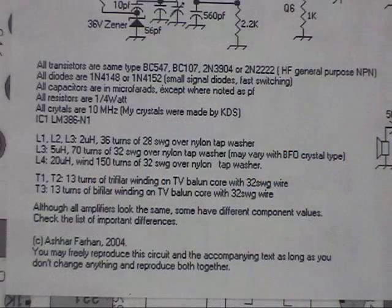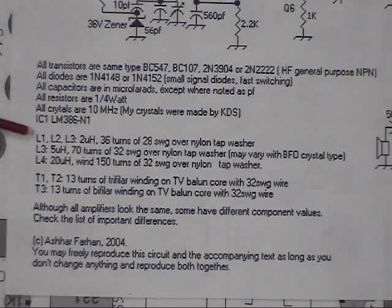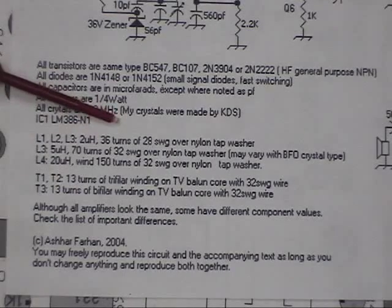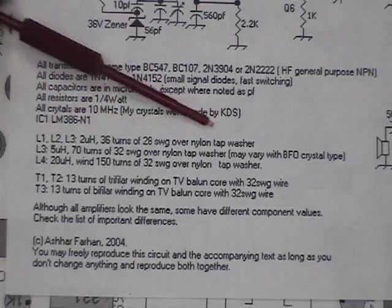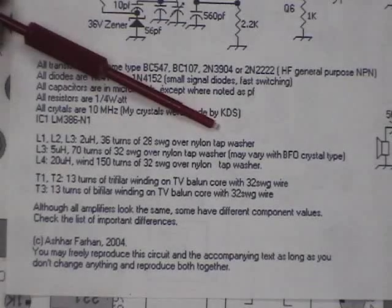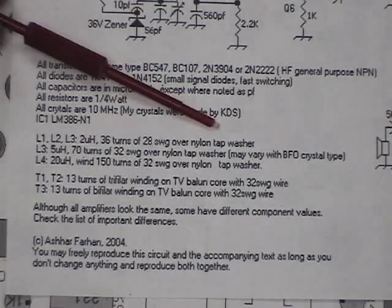You've got ready to build your BIT-X and you're looking at the schematic. Down here it says L1, L2, L3, 2 microhenries, 36 turns of number 28 gauge wire over nylon tap washer. What's a tap washer? Where do I find them? Well, probably an easier way to do is to simply use toroid cores instead of tap washers.